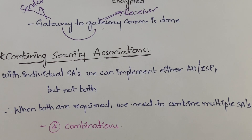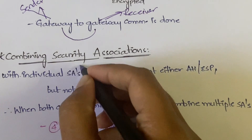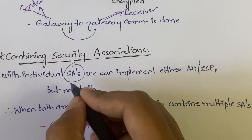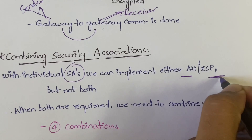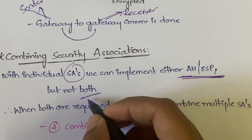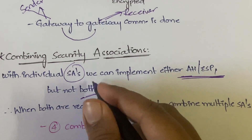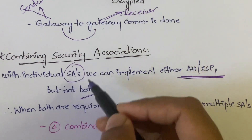Now basically, you know what security associations are — we are combining two different things. So why do we have to combine these security associations? With a single security association, you can either implement Authentication Header or Encapsulating Security Payload, but both of them at the same time you cannot implement with individual security associations.